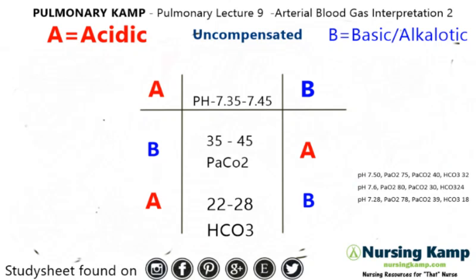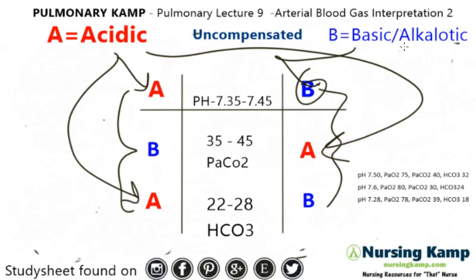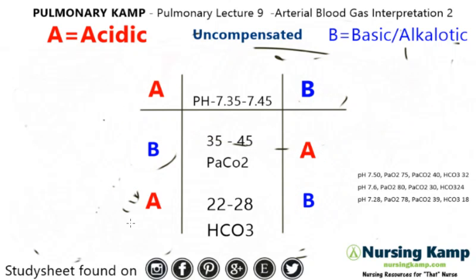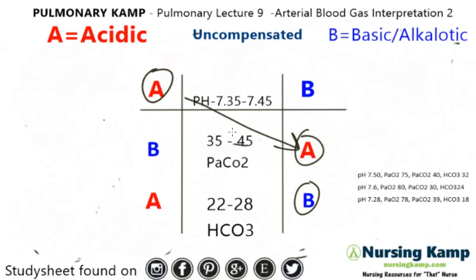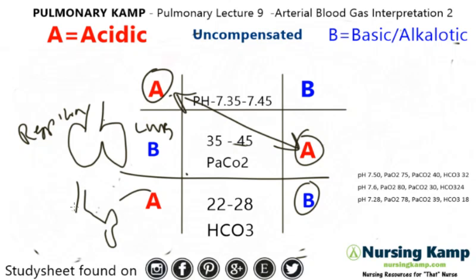In my previous lecture I talked about the layout called the ABBAB method, which is the easiest way to interpret an ABG. We lay it out where A stands for acidosis or acidotic and B stands for basic or alkalotic. In the first interpretation we circle the ABGs they relate to and connect the two that are the same. ABGs are regulated by the lungs — the respiratory section — or the kidneys — the metabolic section — and these will compensate when there's a problem.